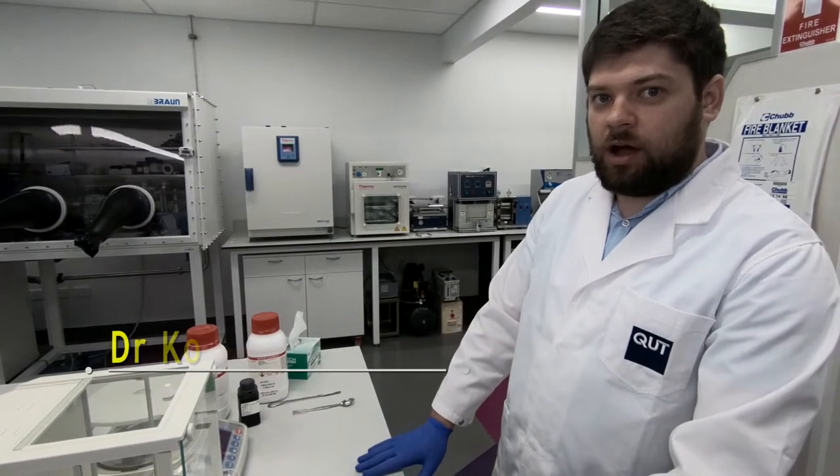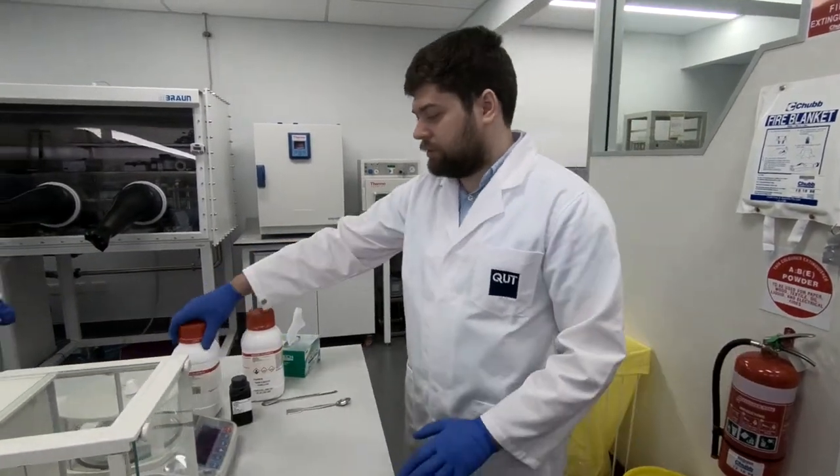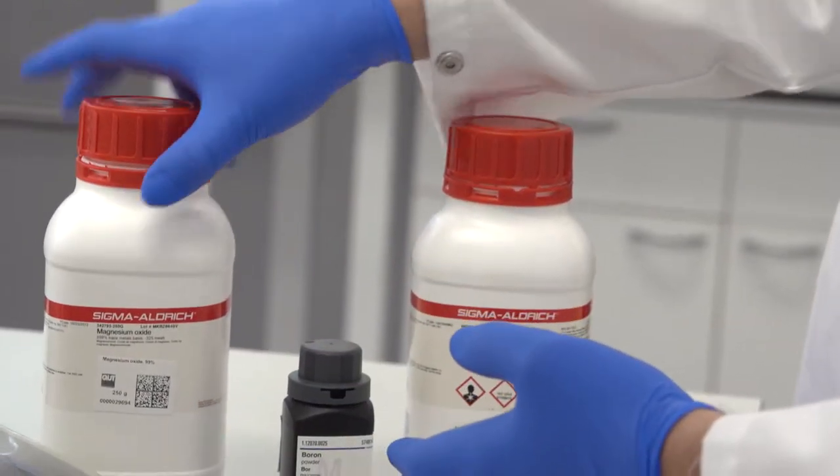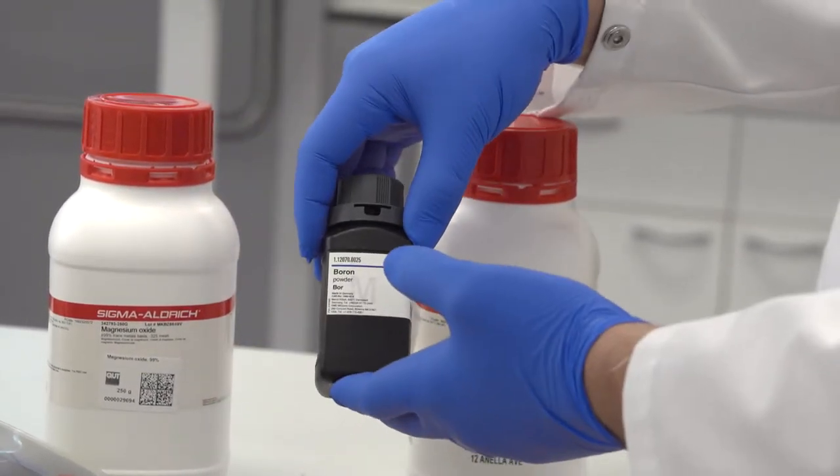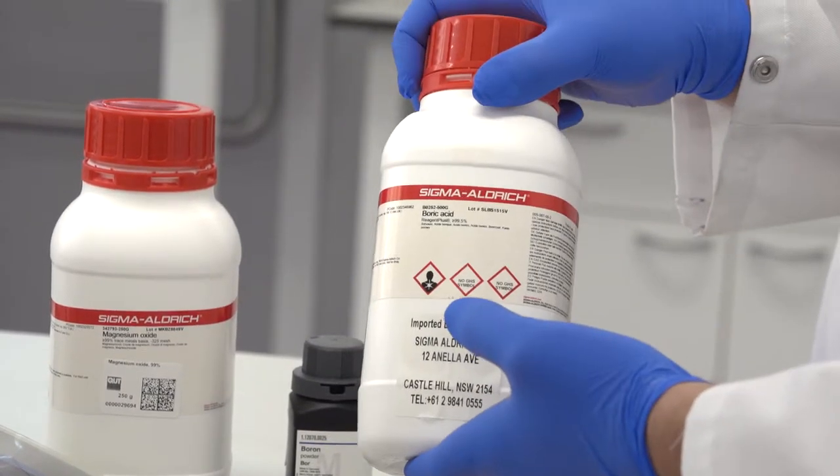Hello everyone. Our first step is preparation of powder mixture. For this synthesis we will use 0.5 grams of magnesium oxide, 9 grams of boron, and 2 grams of boric acid. First of all, we need to measure the weight of powders.